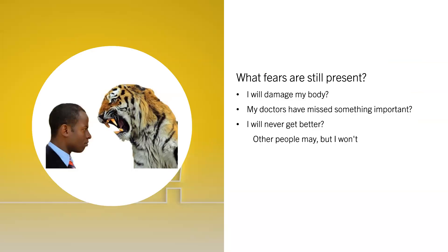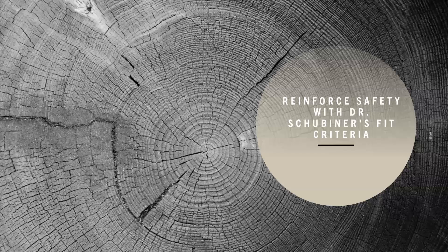It's important to understand fully that your symptoms are neuroplastic in order to do neural reprocessing therapy. We're teaching the unconscious brain there's no danger in the body by showing it, so we need to believe it fully with our rational brain first. What does your conscious brain believe at this point? Do you have any fears still around the symptoms, or are you not entirely convinced that they're neuroplastic? If so, I recommend reinforcing safety with Dr. Schubiner's FIT criteria, which helps determine if the symptoms are neuroplastic.